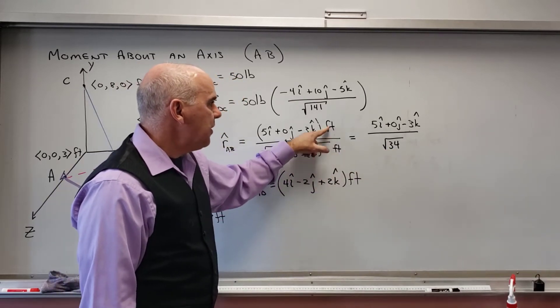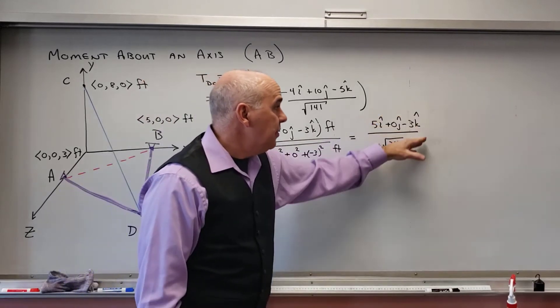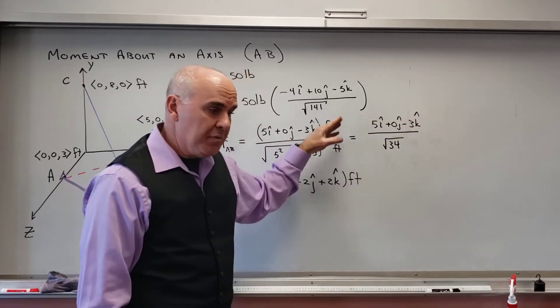Divide by the magnitude of that. 25 plus 9 is 34. I've got feet here and feet here. Those are going to go away. So this is a unit vector.